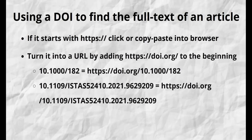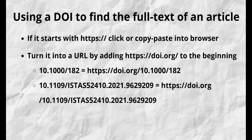Let's say you have the DOI for an article but not the article itself. How can you use the DOI to find the full text? If the DOI starts with HTTP or HTTPS, it's simple — just click on it or paste it into your web browser. You can also turn any DOI starting with a 10 into a URL by adding HTTP://doi.org to the beginning. For example, this first link here leads to the DOI handbook.